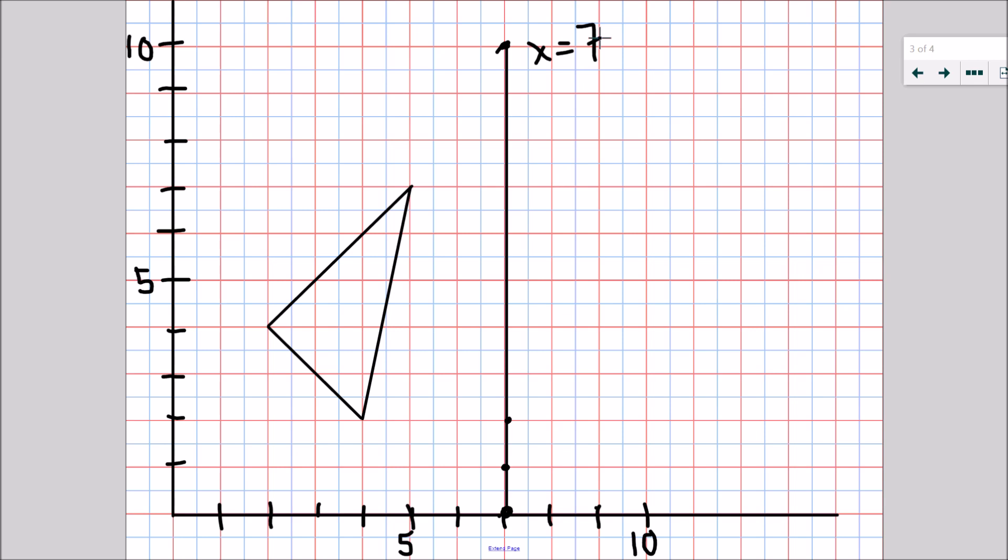Now to reflect across x equals 7, I'm going to start by marking the corners of the shape I want to reflect. I want to make sure that each of these corners is the same distance away from this line when I'm finished, but in the opposite direction.